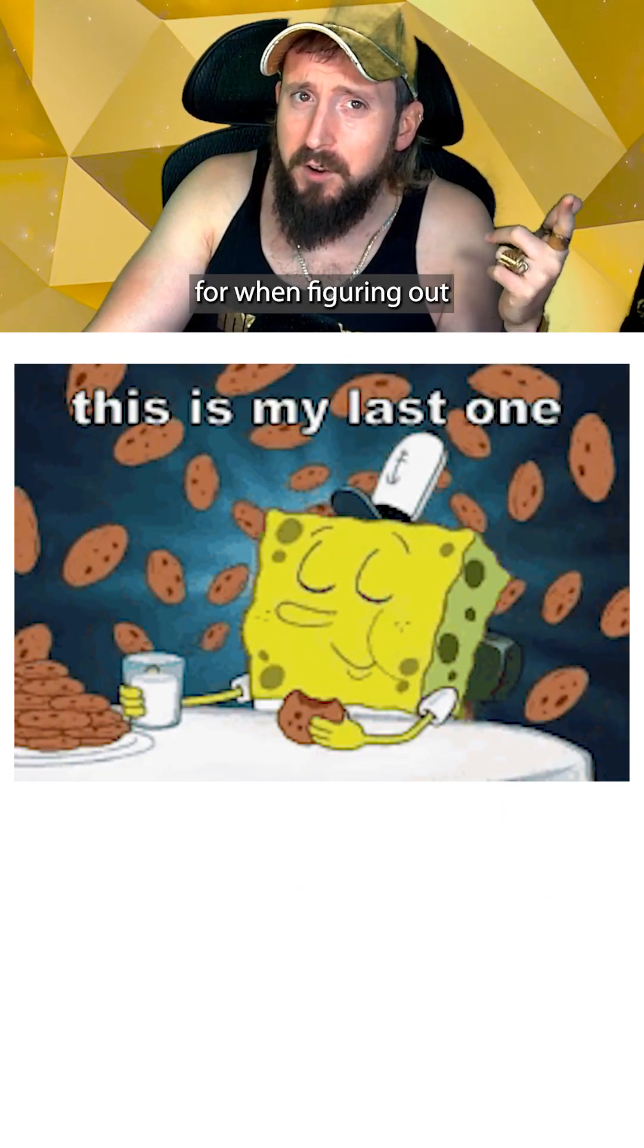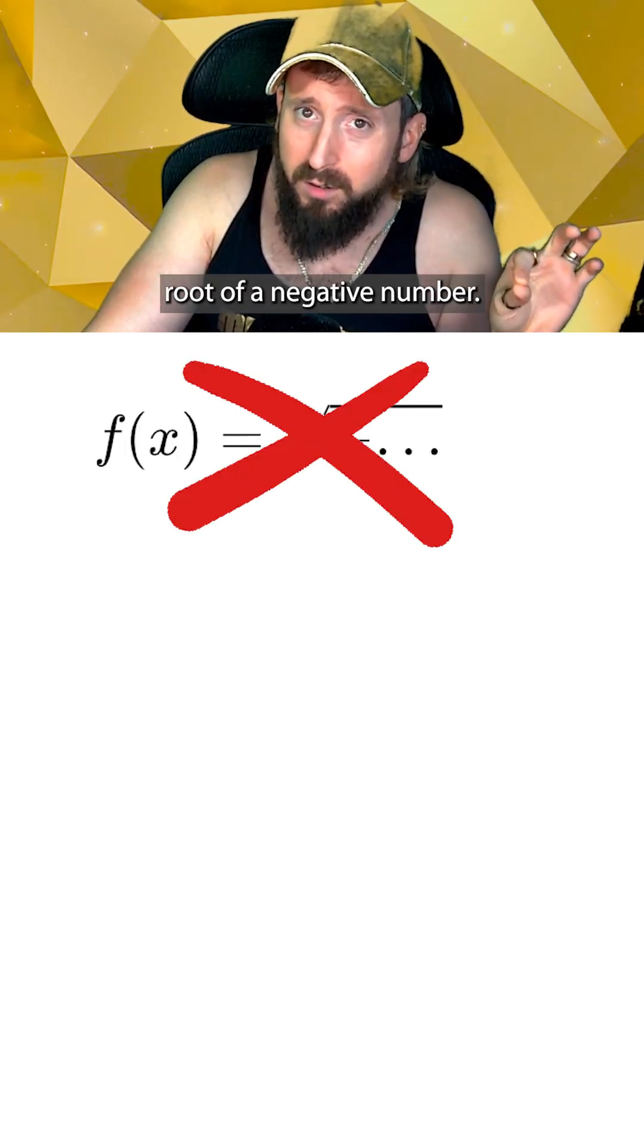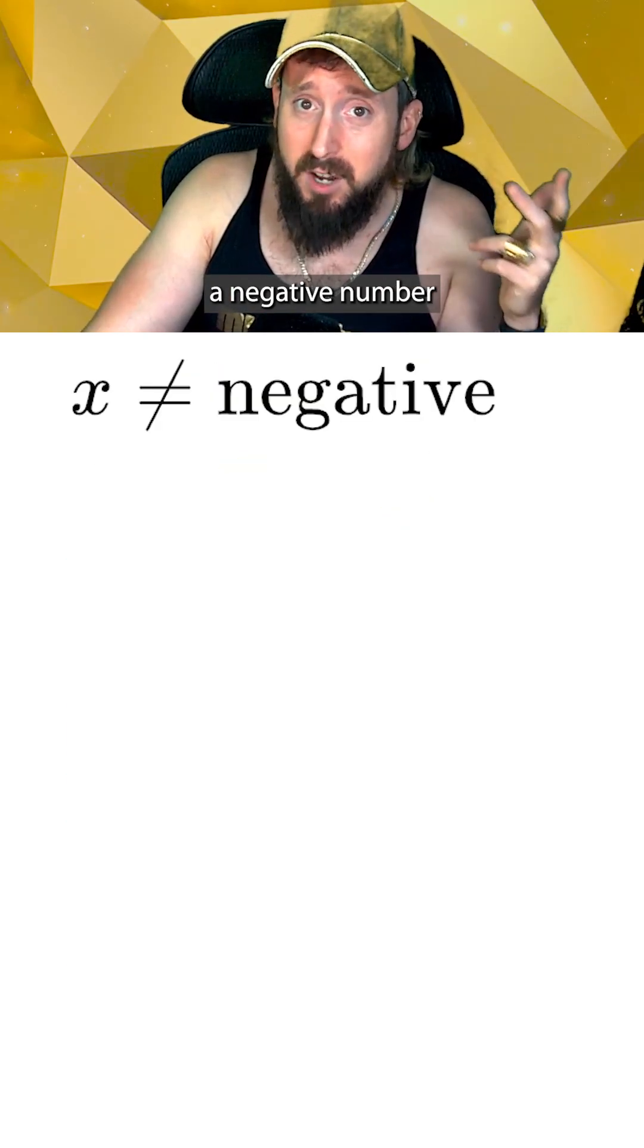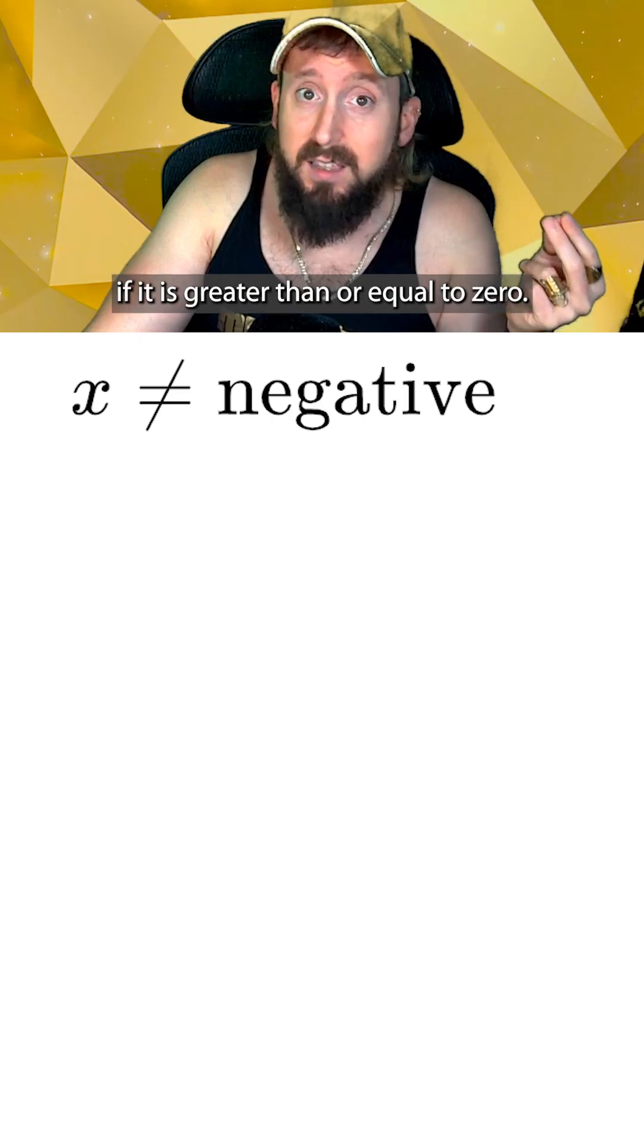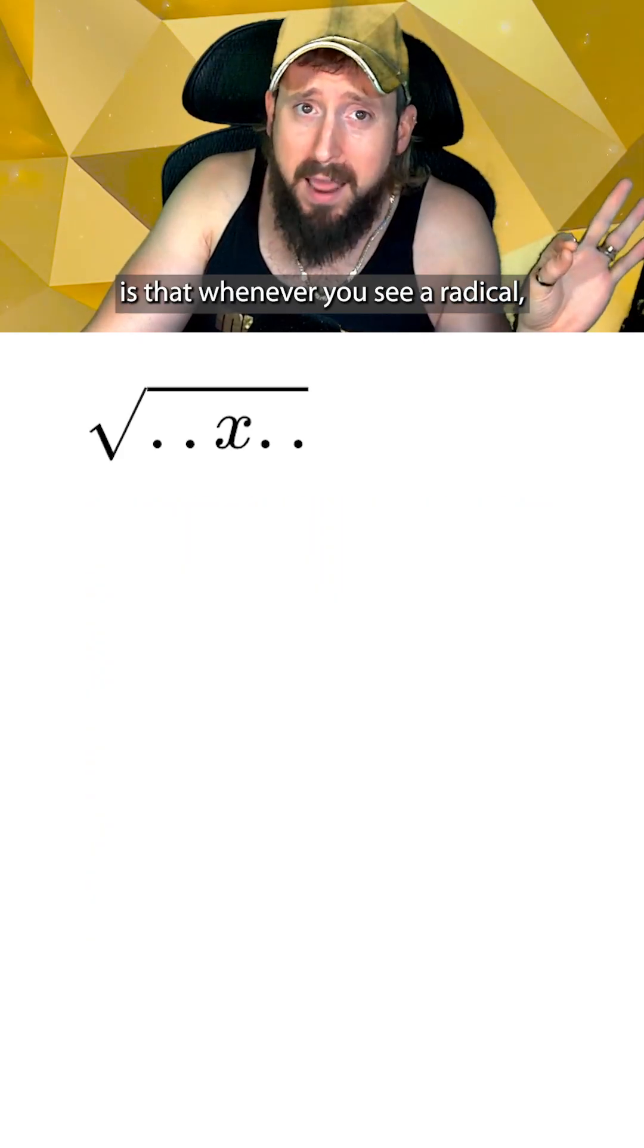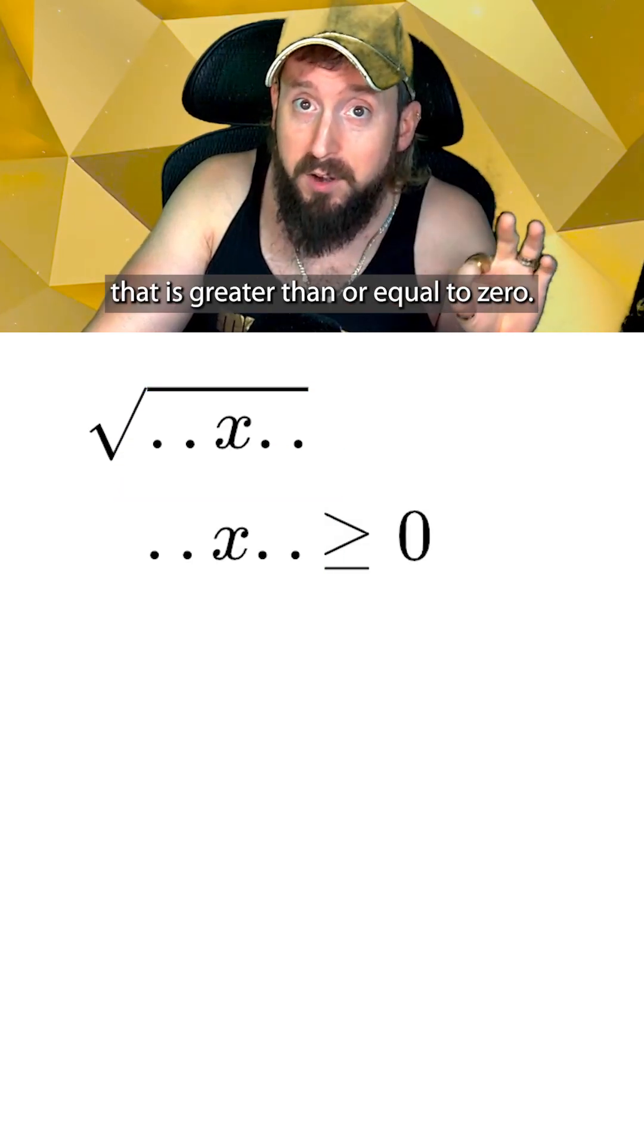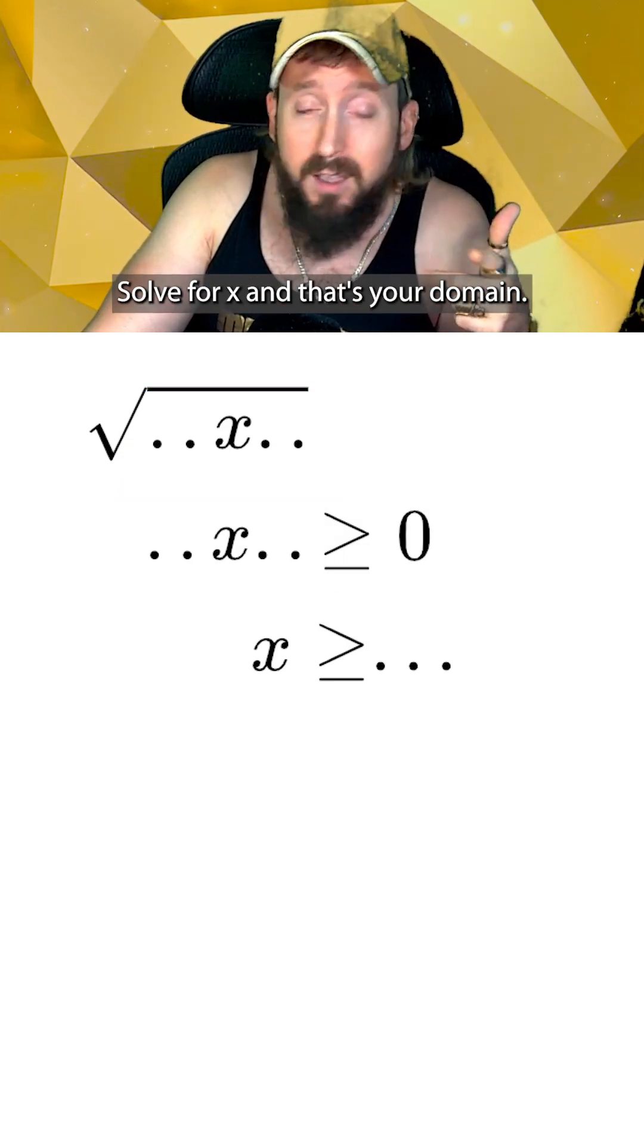The last rule we need to look out for when figuring out domains is making sure we don't take the square root of a negative number. Now making sure something isn't a negative number is the same thing as checking if it is greater than or equal to zero. My trick here is that whenever you see a radical, take whatever is inside, write it as an inequality that is greater than or equal to zero, solve for x, and that's your domain.